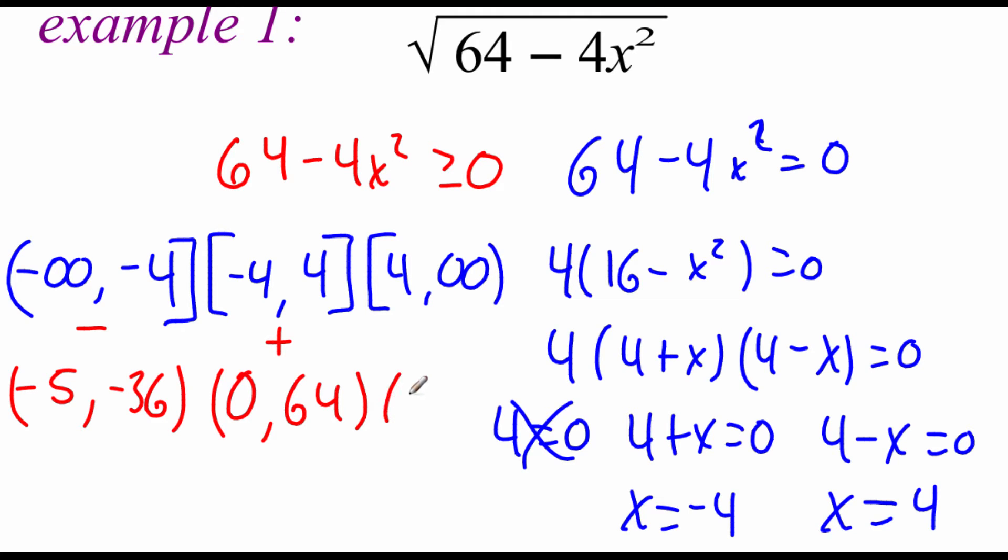With this last one, let's maybe plug in 5. When we do that, I think we're going to end up with negative 36 again, so this ends up being a negative interval. Since we were looking for the stuff that is greater than or equal to 0, that would mean we're looking for the positive things. We're going to get this interval right here from negative 4 to 4. So that would be the domain of this function. It's all the numbers between negative 4 and positive 4 with those end values included.